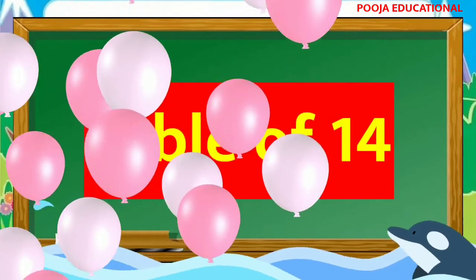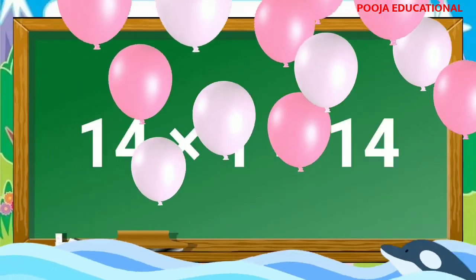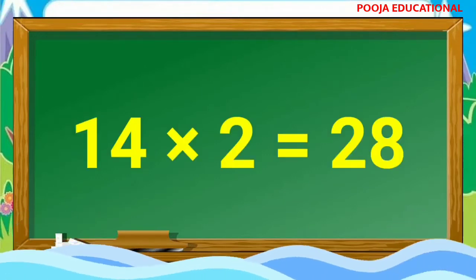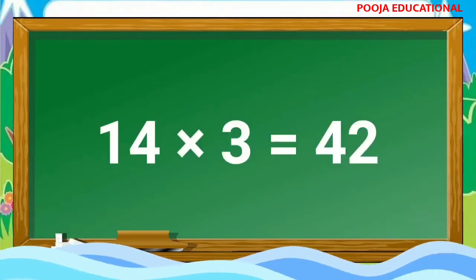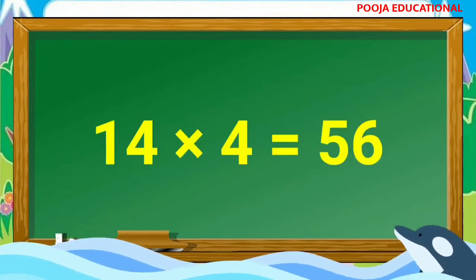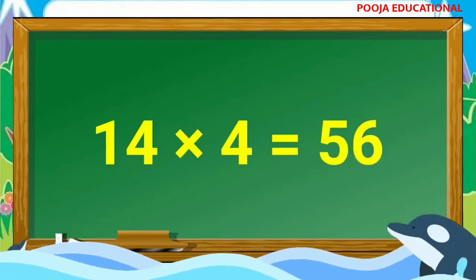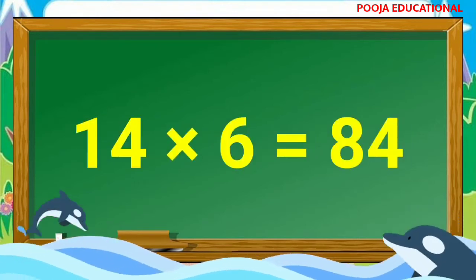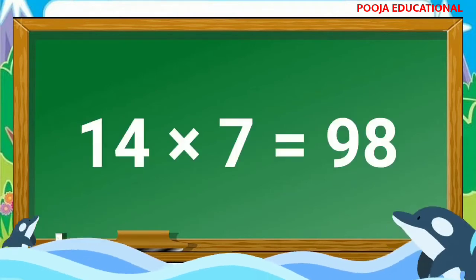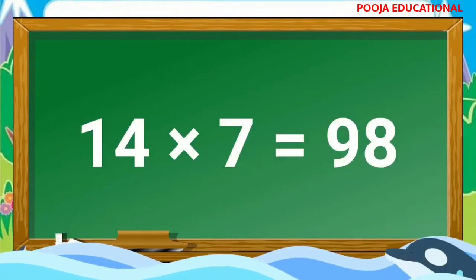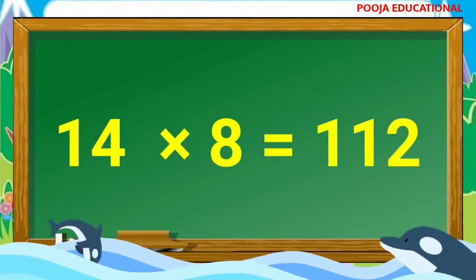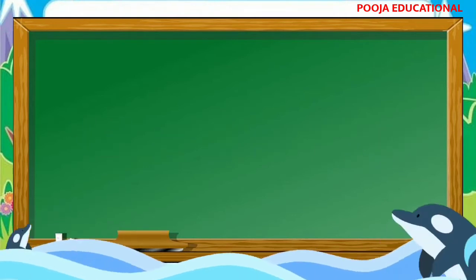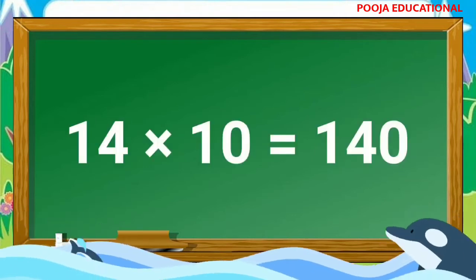Table of 14: 14×1=14, 14×2=28, 14×3=42, 14×4=56, 14×5=70, 14×6=84, 14×7=98, 14×8=112, 14×9=126, 14×10=140.